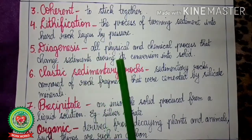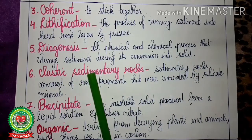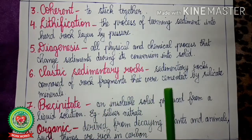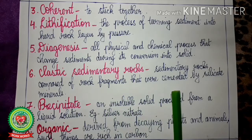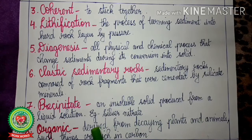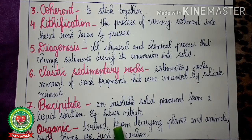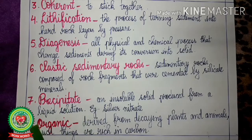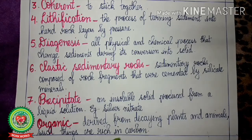Diagenesis refers to all physical and chemical processes that change sediments during their conversion into solid rock. Clastic sedimentary rocks are composed of rock fragments cemented or made compact and hard by silicate minerals. Precipitate is an insoluble solid produced from a liquid solution — for example, silver nitrate. Organic means decaying plants and animals; rocks containing dead and decaying organic matter are very rich in carbon.